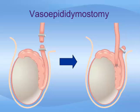Sometimes after a vasectomy, the first part of the vas, or the epididymis, can become blocked. In this case, reconnecting the vas deferens only would not restore an open channel, so the vas has to be connected further back at the epididymis. This procedure is called a vasoepididymostomy.